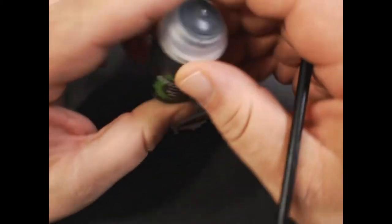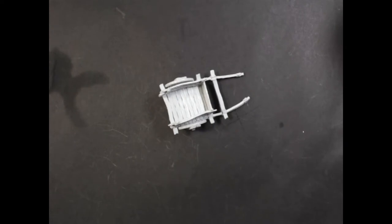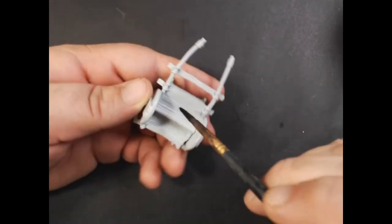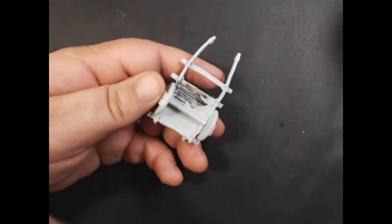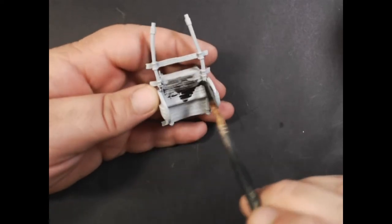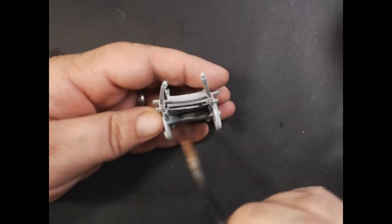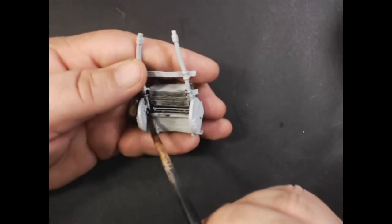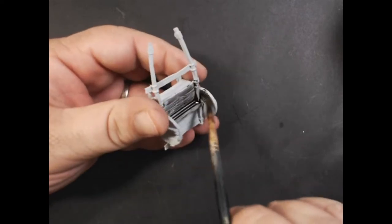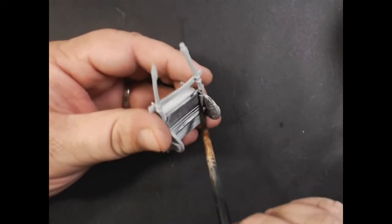Starting off, we're going to coat the entire thing with Citadel Nuln Oil Wash. I like to start on the bottom when doing things like this just because it's easier to handle and get less paint on your hands.